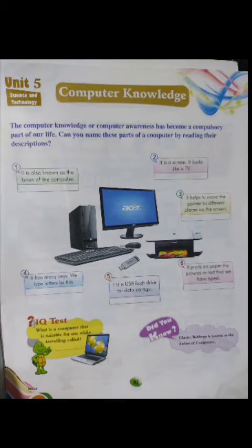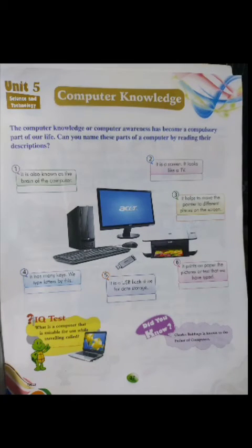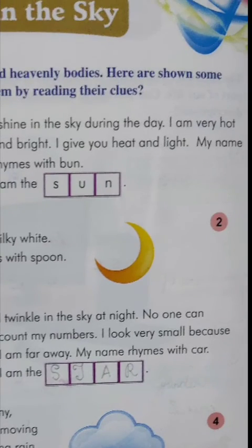Next we will learn the page High in the Sky. You have to write the names of the heavenly bodies shown. Heavenly bodies are things in the sky - the sun, moon, stars, and clouds. Some information is given and you have to write the name. Number one: I shine in the sky during the day, I am very hot and bright, I give you heat and light, my name rhymes with bun - I am the Sun.